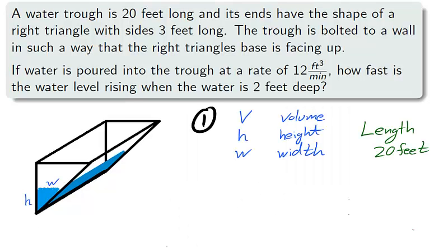Again, don't be fooled by the constants provided in the problem. If you read carefully, most of the constants are for the trough, but the problem concerns the water. The water has a constant length of 20 feet. The variables will be volume, height, and width.